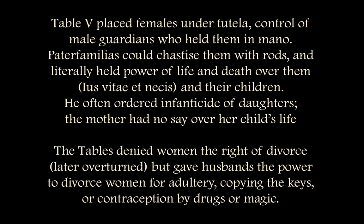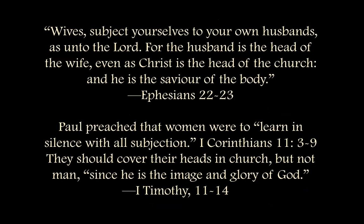This was also true in Greece. Women originally did not have the right of divorce, but husbands could divorce women for adultery, for copying the keys — which could allude to having sexual affairs or accessing the wine, which was forbidden — women weren't supposed to drink wine in Rome. The third offense would be contraception by drugs or magic. The husband wanted as many sons as possible, so women weren't allowed to control their own birth.